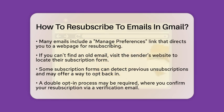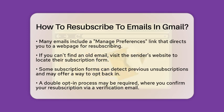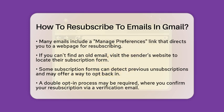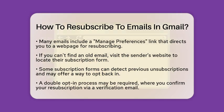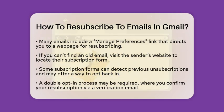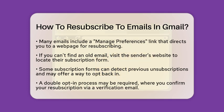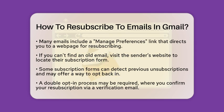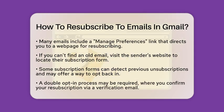If you cannot find an old email, you can visit the sender's website directly. Look for their subscription form. Some forms can detect if your email was previously unsubscribed and may offer a way to opt back in, often through a double opt-in process. This means after you submit your email, you will receive a confirmation email with a link to verify your resubscription. This step ensures your consent is clear.